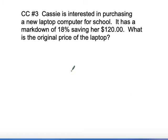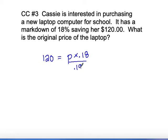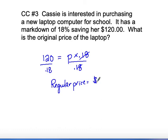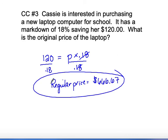The last example is from Concept Check 3. Cassie is interested in purchasing a new laptop. It has a markdown of 18%, saving her $120. What was the original price? We set $120 equal to the original price times 18%, then solve by dividing both sides by 0.18. So $120 divided by 0.18 gives an original price of $666.67. Look for your problems on Google Classroom and let me know if you have any questions.